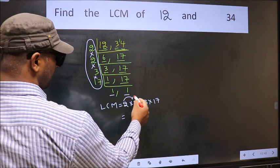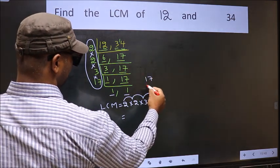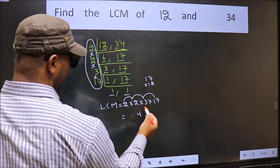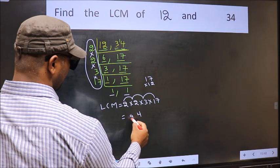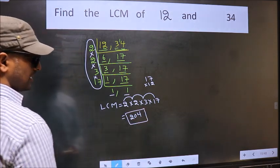2 into 2, 4 into 3, 12 into 17. So 12 into 7, 84. 4, 8, 12 once 12 plus 8, 20. So 204 is our LCM.